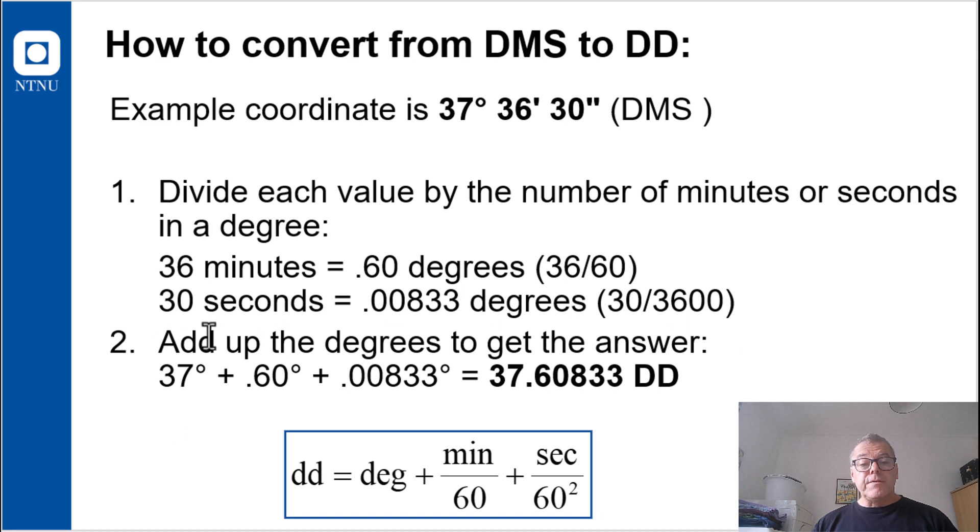So we have 37 degrees, the 36 minutes, that is the 0.6 degrees. And we have the 00833 degrees from the seconds. So this comes to these numbers of decimal degrees. And this is the generic formula. First take the degrees, then the minutes, and the second.